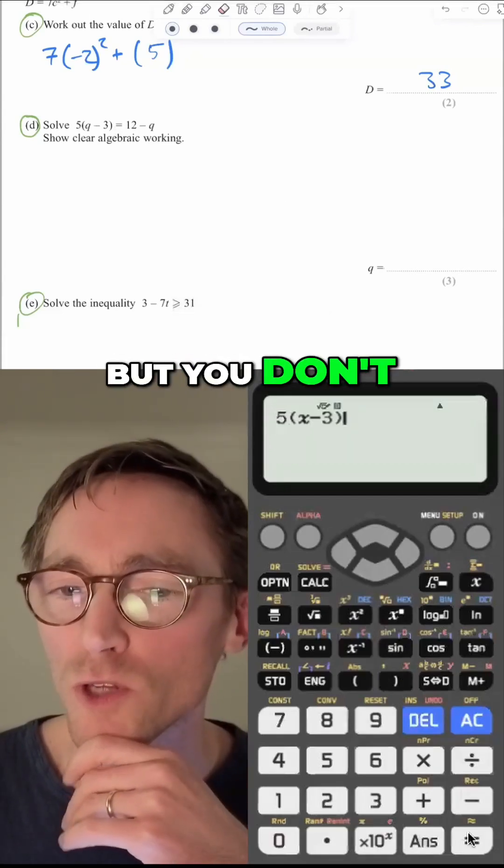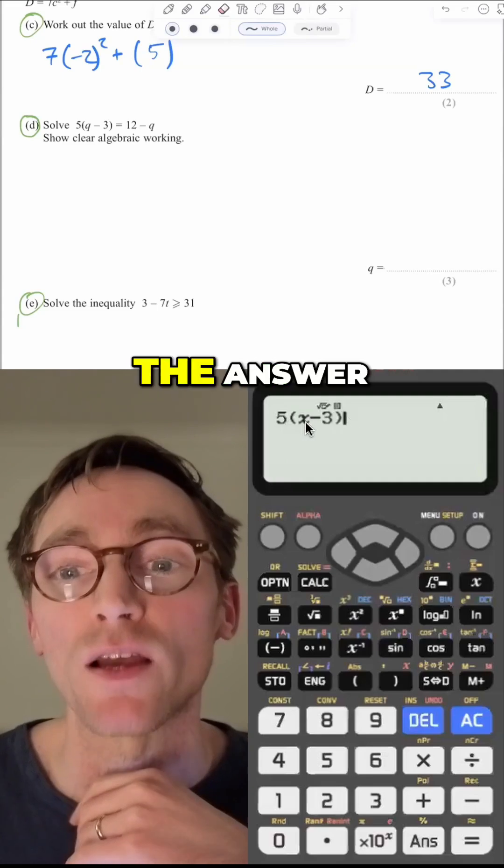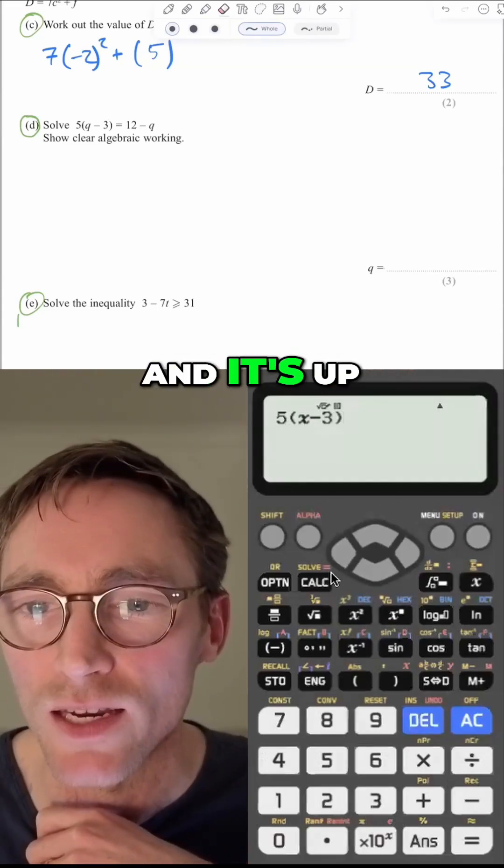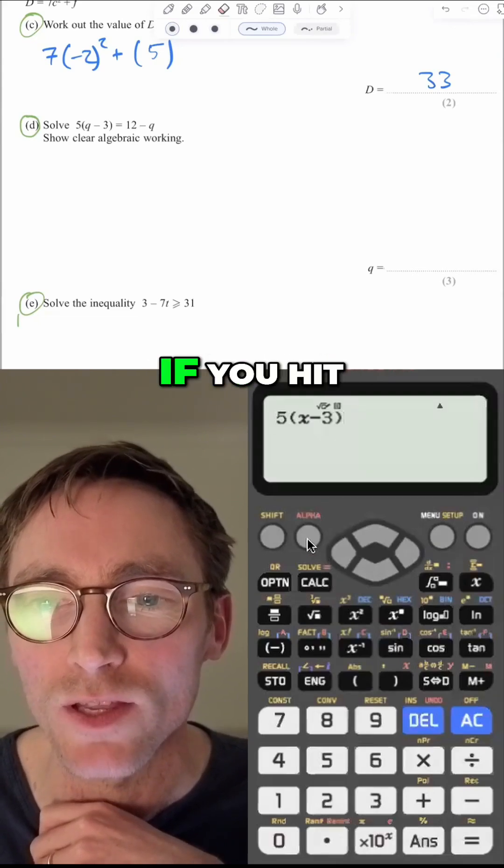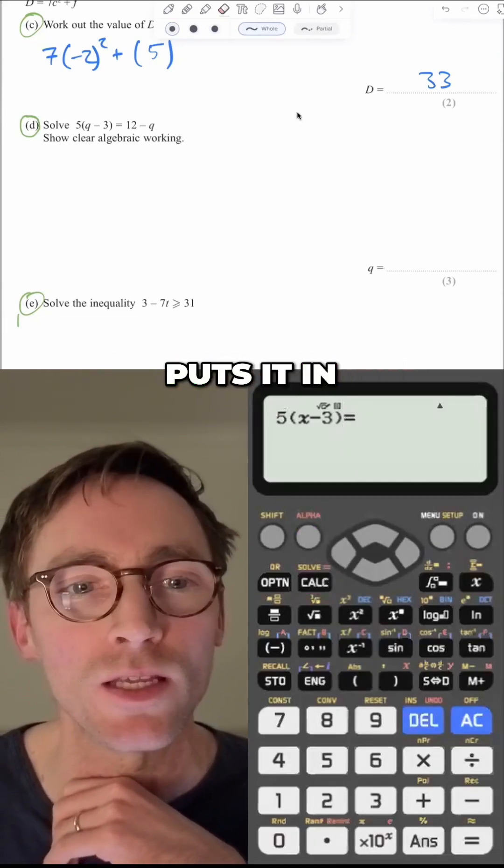Now I want to put equals, but you don't want to hit this equals because it's going to think you're trying to find the answer. So you want to find another equals somewhere on your calculator that isn't that equals, and it's up there. You see this weird little red equals. If you hit alpha, then calc, it pulls up this red equals and it puts it in there.